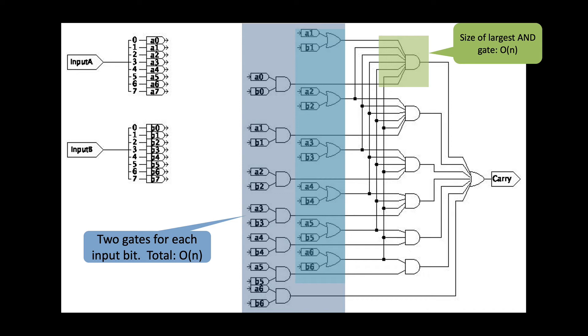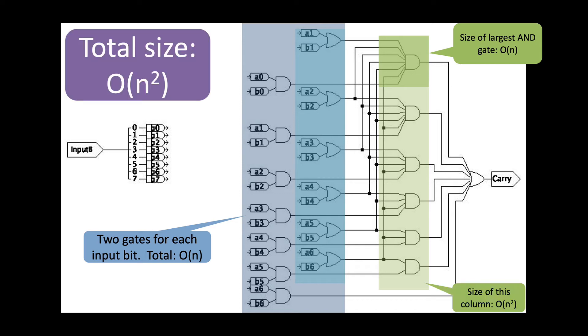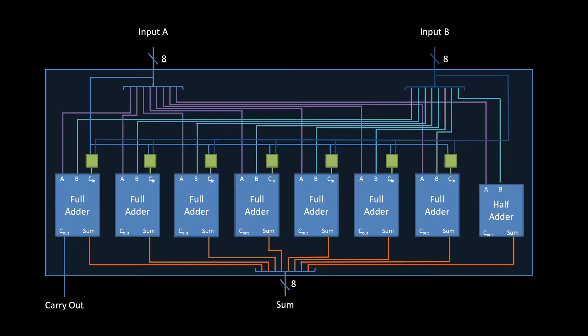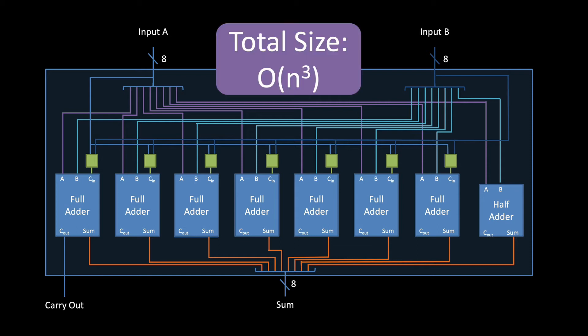Now, there are big O of N gates in this group. So, when we combine those two, we get a total size of big O of N squared. Giving a total size for this sub-circuit that's big O of N squared. Now, since there are N of these carry-in sub-circuits, each of which is big O of N squared, we get a total size of big O of N cubed.